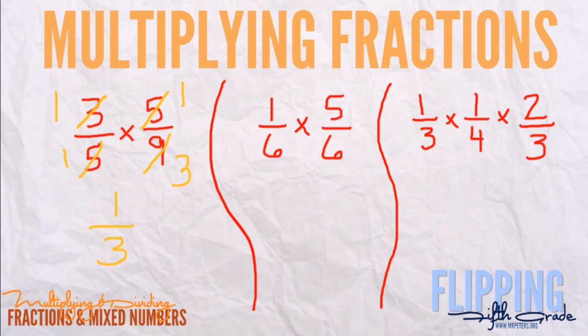Sometimes, as in the next problem, you can't simplify. You can't simplify one and six, and you can't simplify six and five, so you just have to multiply across. Take one times five and six times six. It's important to keep the numerators and denominators together. One times five is five, and six times six is 36. And there's our answer.